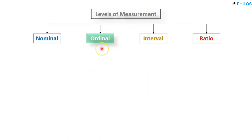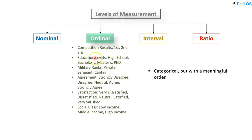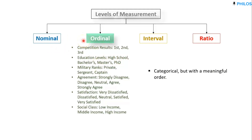Now let's look at the ordinal level. For ordinal level data, these are some examples. Ordinal level data is also categorical, just like nominal. Under the variable educational level, you can have a group of high school students, bachelor's degree students, master's degree, and PhD. But for this one there is a meaningful order — you can rank them. We place more value on PhD than master's, master's than bachelor's, and bachelor's than high school certificate.